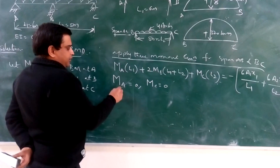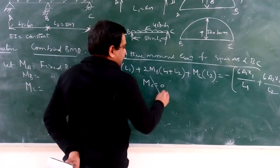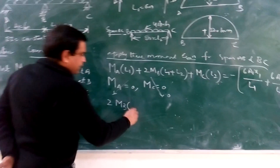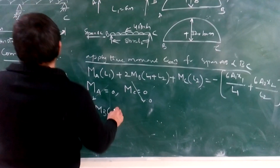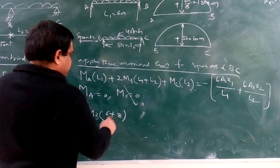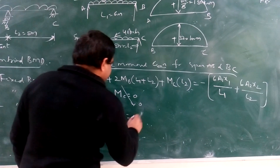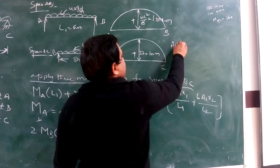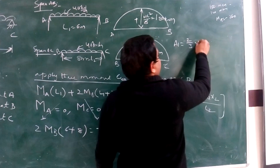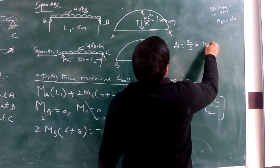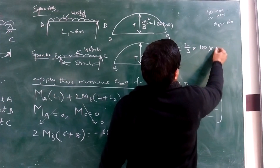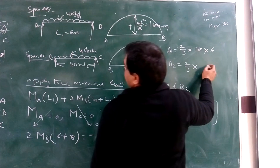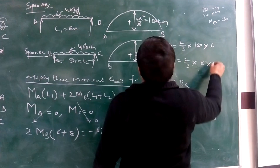Since MA at the left support is 0 and MC at the right support is 0, the equation reduces to 2·MB·(6 + 8) equals minus 6 times the area terms. The area A1 of the first parabola is (2/3)·base·height, where the base is 6 meters and height is 180. The area A2 of the second parabola is (2/3)·base·height, where the base is 8 meters and height is 320.